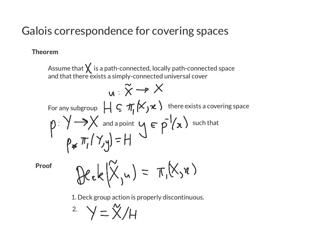The next thing we're going to do is we're going to take the quotient of x tilde, not by the whole deck group, because that would give us x, but by a subgroup, namely the subgroup h. This will give us a space y, which is going to be our covering space.